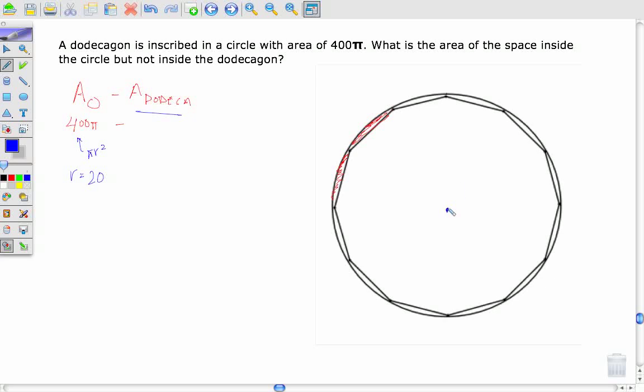And that's going to help me because that's going to give me this length, the distance from one of my vertices of my dodecagon to the center since it is inscribed. And that's going to help me to work with this triangle right here. Now this triangle right here, if I remember this, is a dodecagon.